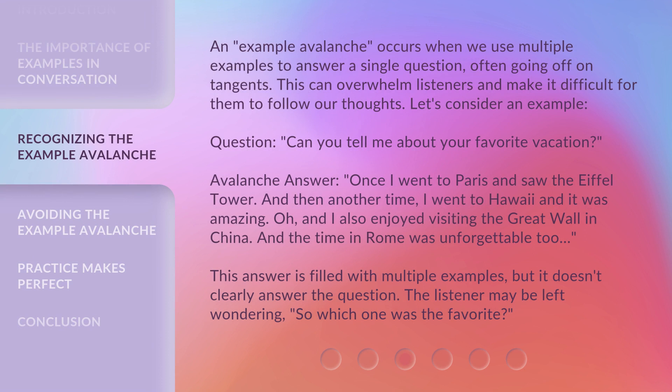An example avalanche occurs when we use multiple examples to answer a single question, often going off on tangents. This can overwhelm listeners and make it difficult for them to follow our thoughts.